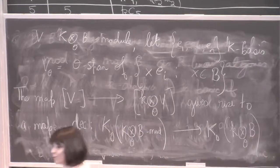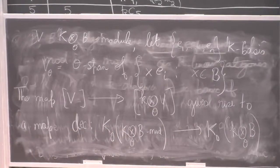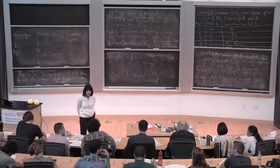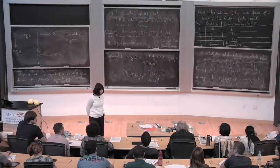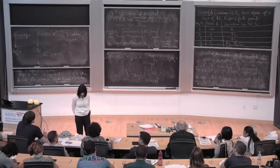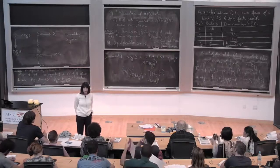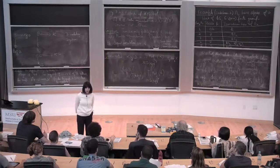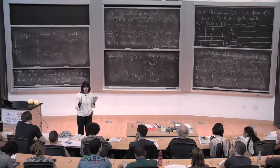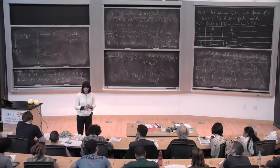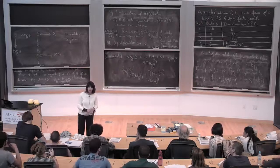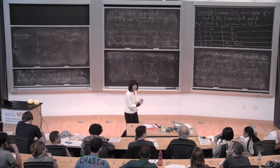Could you say a little more about the Brauer tree algebras that came up and their role in the story? The actual theorem is that if you have any block with cyclic defect group — I'll define that tomorrow — then the block is always a Brauer tree algebra. In fact it's if and only if: a block is a Brauer tree algebra if and only if the defect group is cyclic.